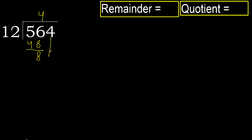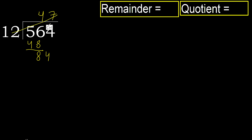Next, bring down to get 84. 12 multiplied by 9 is greater. Multiplied by 8 gives 96, which is greater. Multiplied by 7 gives 84, which is not greater. Subtract: 84 minus 84 is 0.